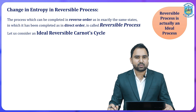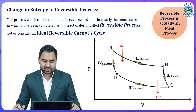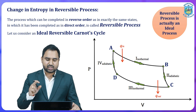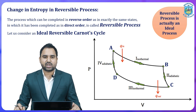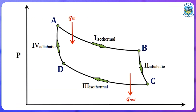The Carnot cycle can be visualized as a graph with pressure on the y-axis and volume on the x-axis. This P-V graph represents four processes: A to B is isothermal expansion, B to C is adiabatic expansion, C to D is isothermal compression, and D to A is adiabatic compression. In isothermal processes the temperature is constant, and in adiabatic processes the heat supplied is zero. Understanding these four processes is very helpful to analyze the change in entropy of a reversible process.